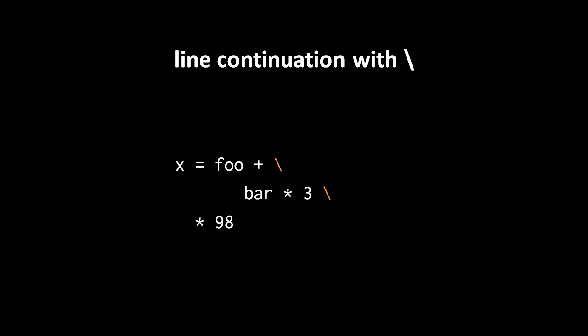So here for example we have one logical line, but it's actually been written across three separate lines, and it reads just simply x equals foo plus bar times 3 times 98.